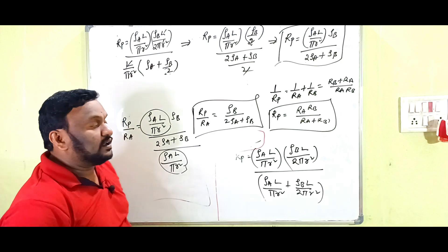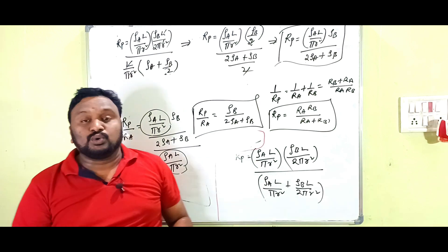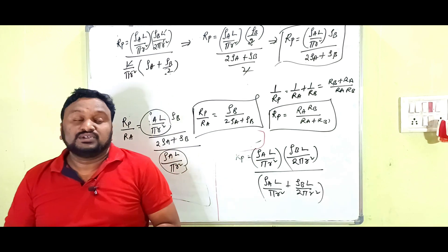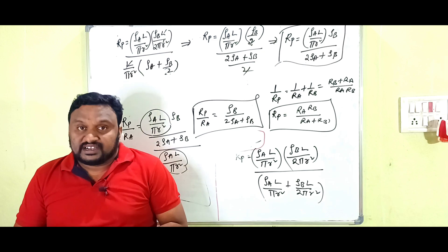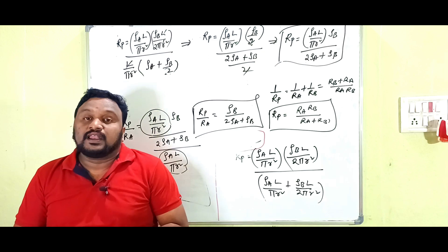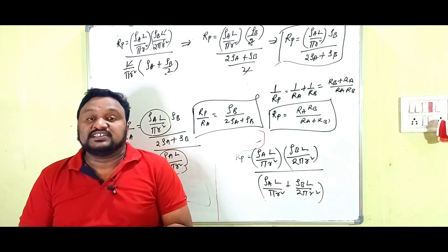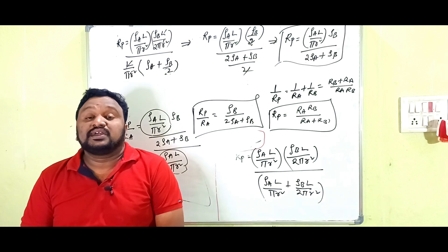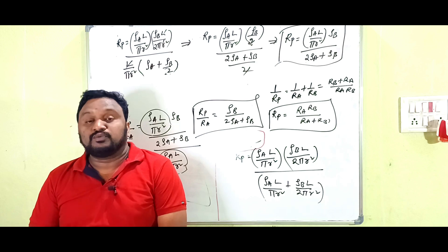So the answer is R_P by R_A equals rho_B divided by (2 rho_A plus rho_B). If you understood this, please like, share, comment on the video and subscribe to the channel to get all notifications. Thank you for watching.